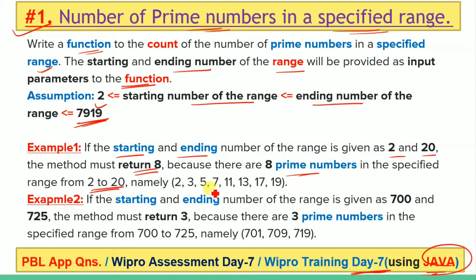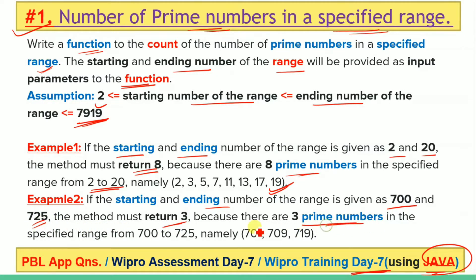There are 8 prime numbers in the specified range from 2 to 20, namely 2, 3, 5, 7, 11, 13, 17 and 19. Similarly, the second example: if the starting and ending number of the range is given as 700 and 725, then the method must return 3, because there are 3 prime numbers in the specified range from 700 to 725.